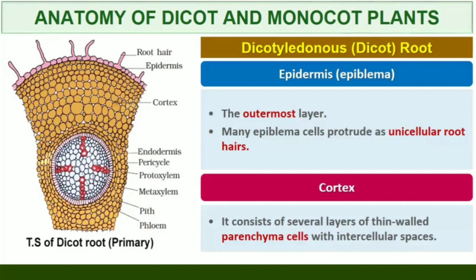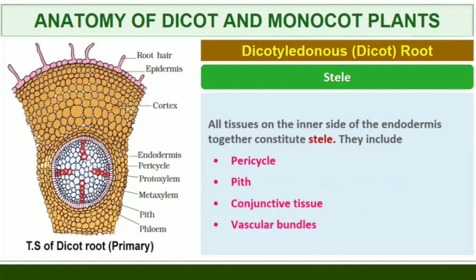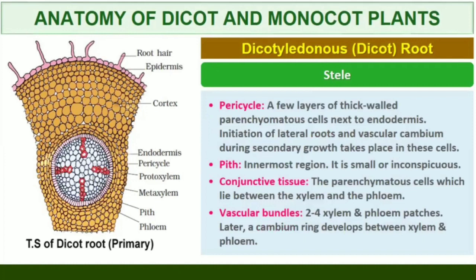The cortex consists of several layers of thin-walled parenchyma cells with intercellular spaces. The innermost layer of the cortex is called endodermis, comprising a single layer of barrel-shaped cells without any intercellular spaces. The tangential as well as radial walls of the endodermal cells have a deposition of water-impermeable waxy material suberin in the form of Casparian strips. Next to endodermis lies a few layers of thick-walled parenchyma cells referred to as pericycle. Initiation of lateral roots and vascular cambium during secondary growth takes place in these cells. The pith is small or inconspicuous. The parenchyma cells which lie between the xylem and the phloem are called conjunctive tissue.